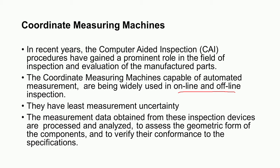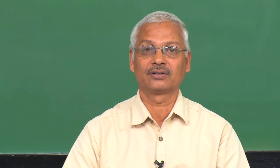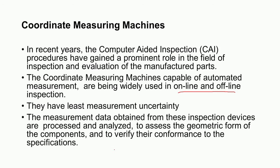There are probes attached to the CMMs — contact probes or non-contact probes such as laser spots. Depending on the length of the surface, a number of points are taken — for example, 6, 12, or 18 points. Those data points are given to software, which calculates the straightness or whatever feature is required, and then tells whether the component is acceptable or not.